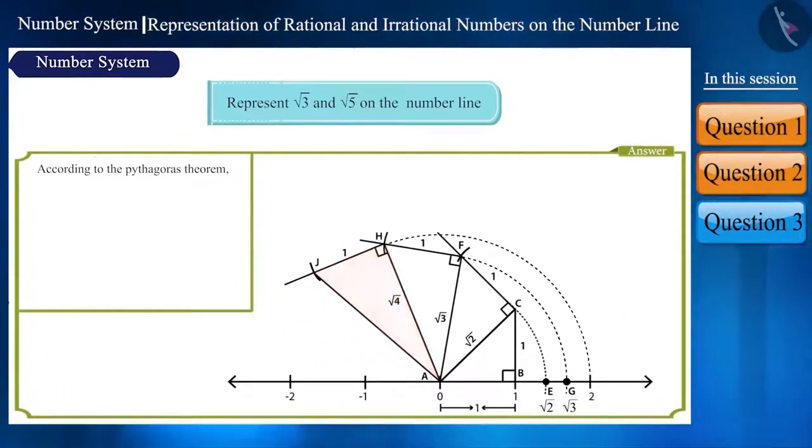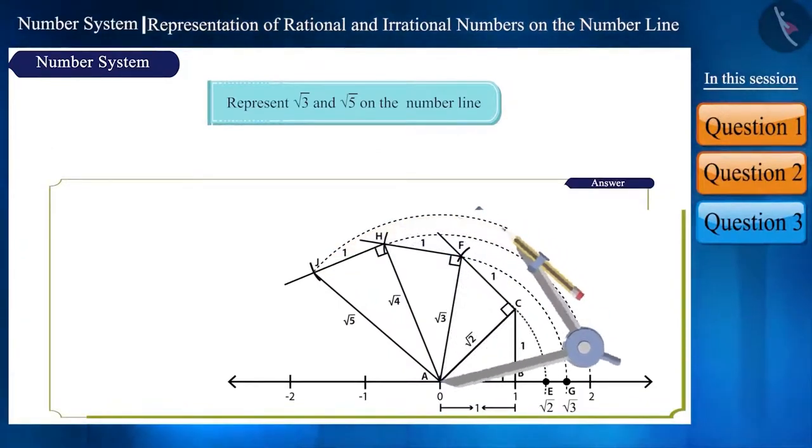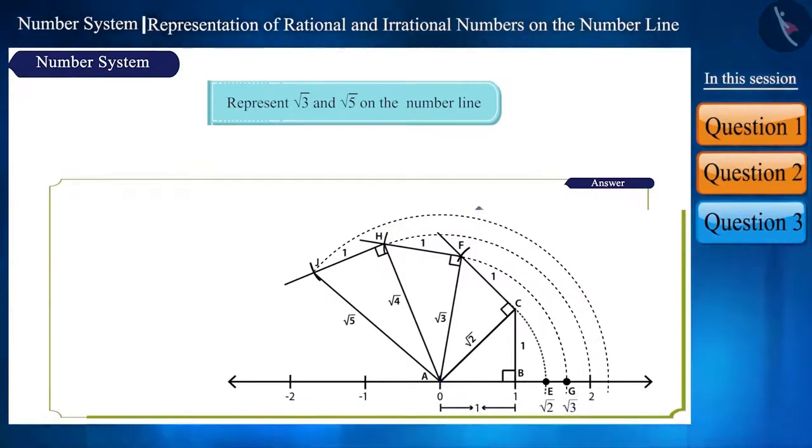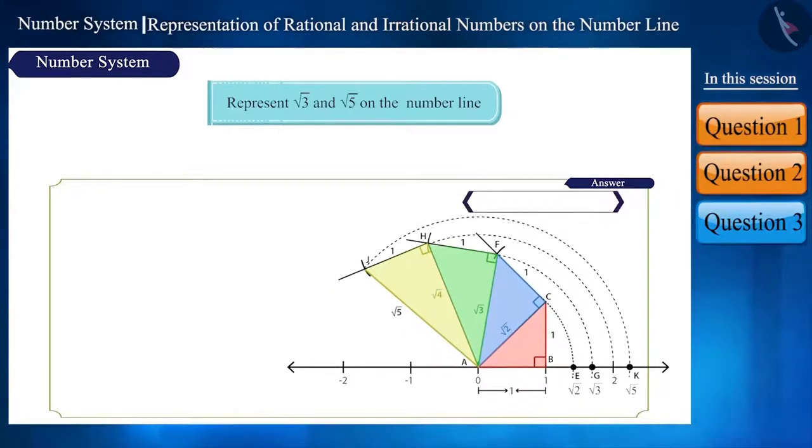In triangle AHJ using Pythagoras theorem, we will get AJ as √5. Measure the length AJ using a compass and keeping A as center. Draw an arc on the number line which cuts it at point K. Point K represents √5 on the number line. The formation obtained as a result of this process is called the square root spiral.